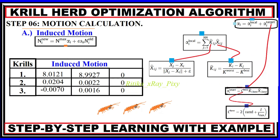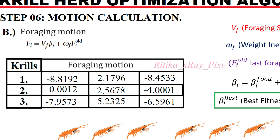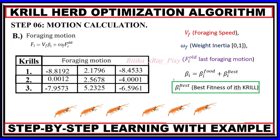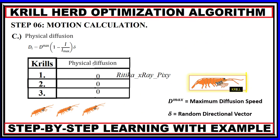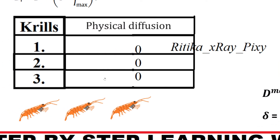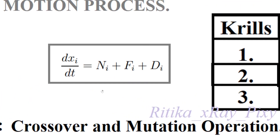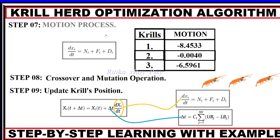After computing the induced motion for the three krills, we calculate the foraging movement. The foraging velocity uses a beat inertia weight, the last foraging motion f_old, and the best fitness of the krill. The foraging motion is then computed for all three krills.